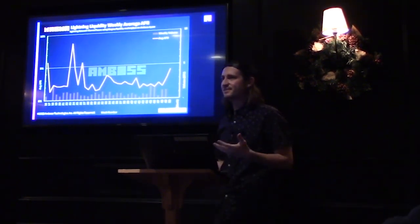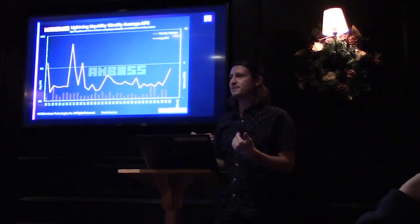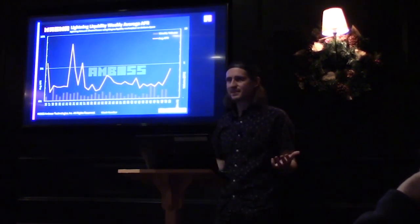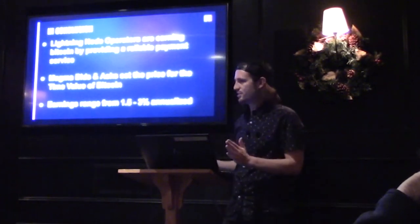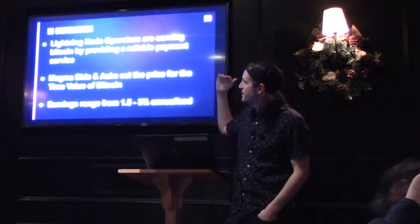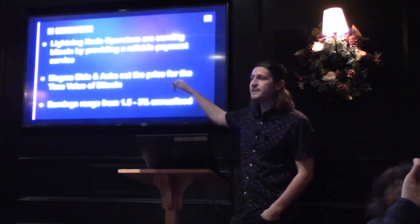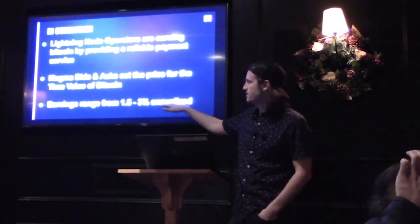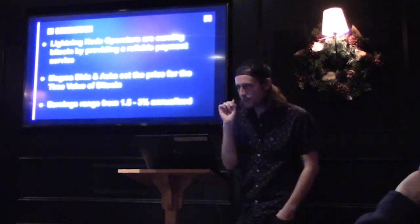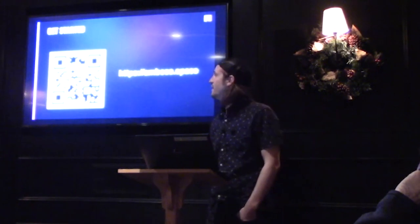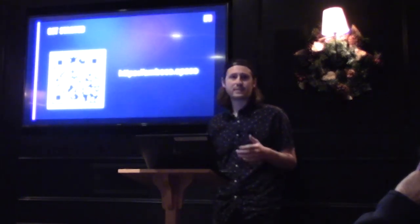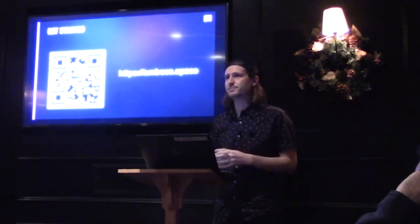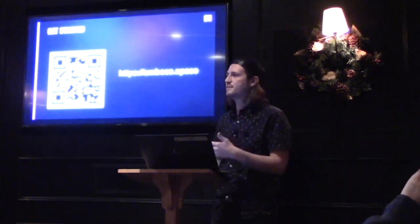What we have on Magma is a non-custodial yield product, which means there's some trust in Amboss to set things up, but after that you don't have to trust us anymore. In conclusion, Lightning node operators are providing a reliable payment service, and these bids and asks are setting the price. Earnings range from one and a half to three percent for stuff sold on Magma. Feel free to check out our website — we're always open to feedback as we pioneer the UX of this.